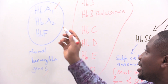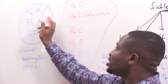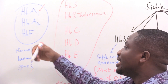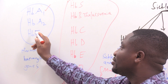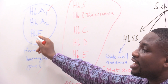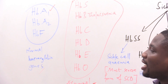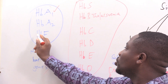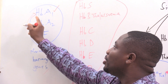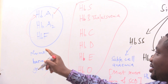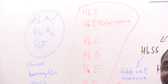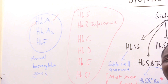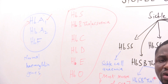In the adult population, HbA1 is dominant. In babies, you have HbF — the fetal hemoglobin — and it is only after six months that HbF will be replaced by HbA1. Now let's move ahead and look at the genes that code for abnormal hemoglobin.